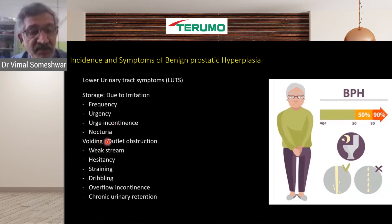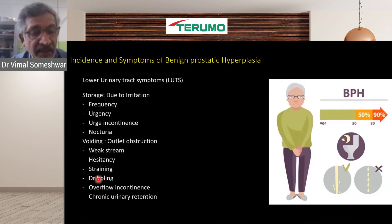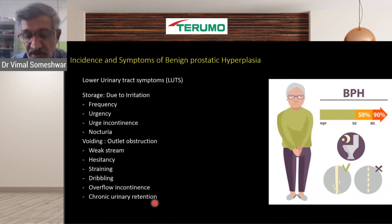There are voiding symptoms caused by outlet obstruction as the urethra is compressed: weak stream, hesitancy — where the patient tries to pass urine but cannot start — straining, dribbling, and overflow incontinence where the bladder becomes full and the patient suddenly passes urine, which can be quite embarrassing. Due to urinary retention, there is also a high incidence of urinary infection in these patients.